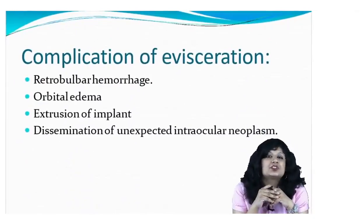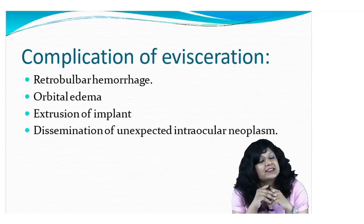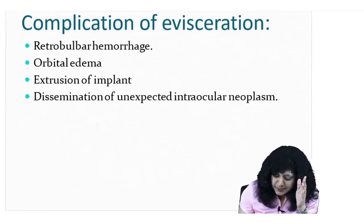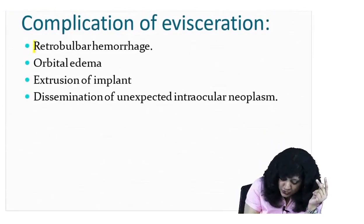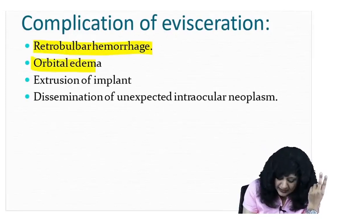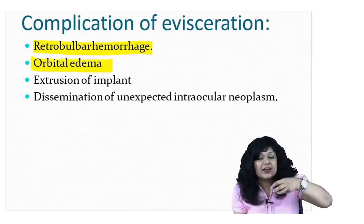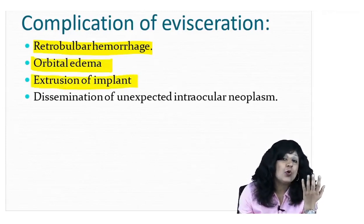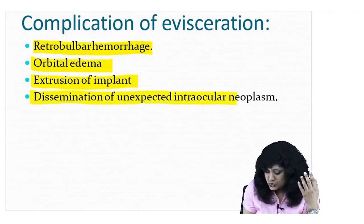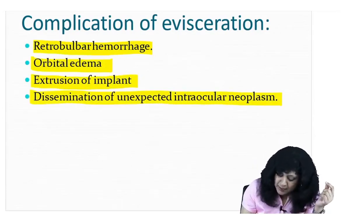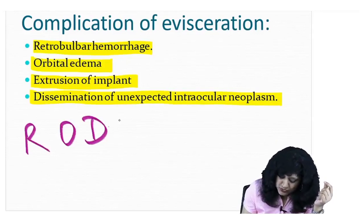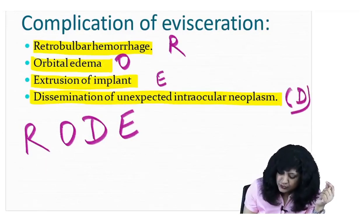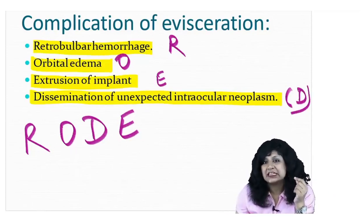The complications of evisceration can be remembered with the mnemonic ROAD: R for retrobulbar hemorrhage, O for orbital edema, A for dissemination of an unknown tumor, and D — wait, actually: R for retrobulbar hemorrhage, O for orbital edema, D for dissemination, and E for extrusion of the implant.